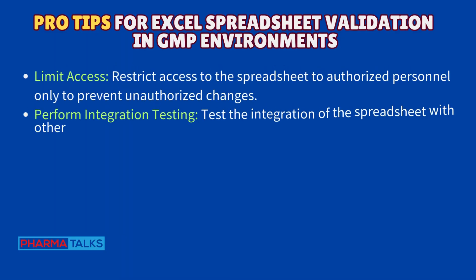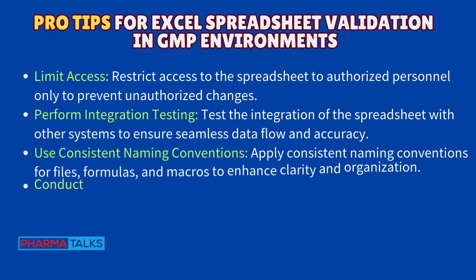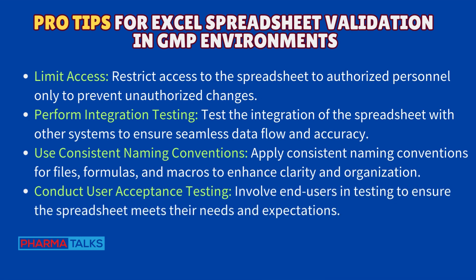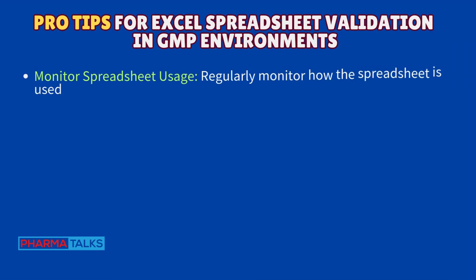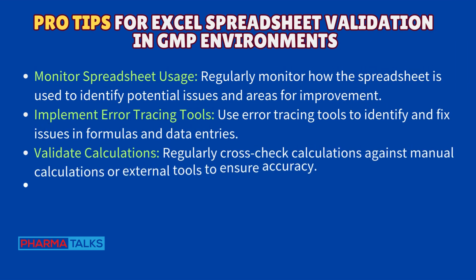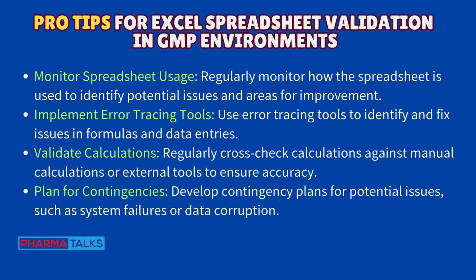Limit access — restrict access to the spreadsheet to authorized personnel only to prevent unauthorized changes. Perform integration testing — test the integration of the spreadsheet with other systems to ensure seamless data flow and accuracy. Use consistent naming conventions — apply consistent naming conventions for files, formulas, and macros to enhance clarity and organization. Conduct user acceptance testing — involve end users in testing to ensure the spreadsheet meets their needs and expectations. Monitor spreadsheet usage — regularly monitor how the spreadsheet is used to identify potential issues and areas for improvement.